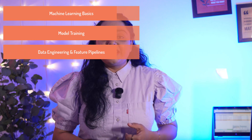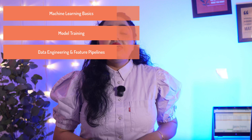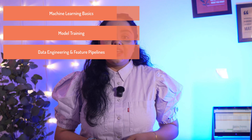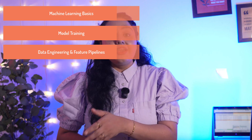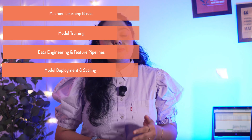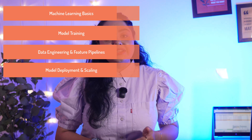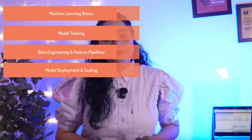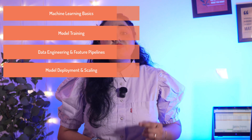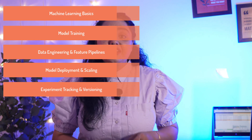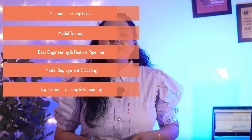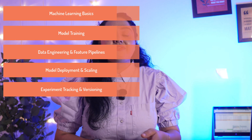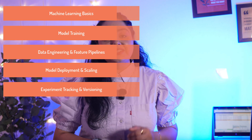Next, you need to master data engineering and feature pipelines. Data processing and transformation is critical for ML models, because a model is only as good as the data it has been trained on. Once ML models are trained, comes the important step of model deployment and scaling. Having knowledge of tools like SageMaker, MLflow, TensorFlow Serving, and Vertex AI will be very helpful. There is also one step unique to machine learning: experiment tracking and versioning. ML models are created through experimentation — a trial-and-error approach to find patterns. It's important to have knowledge of MLflow, DVC, and Kubeflow to manage ML experiments efficiently.